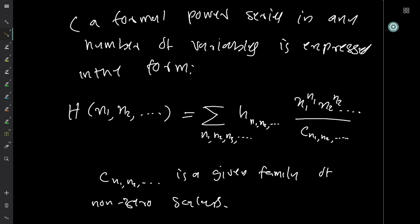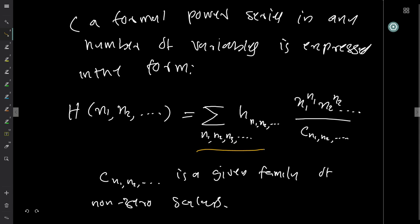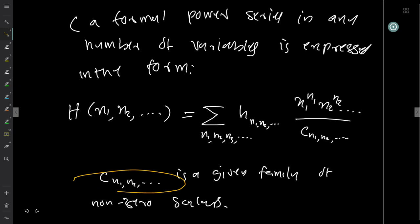A formal power series in any number of variables can be defined as follows. In infinitely many variables x_1, x_2, ..., it is a sum over all tuples (n_1, n_2, n_3, ...) of a(n_1, n_2, ...) · x_1^{n_1} · x_2^{n_2} · ... divided by C(n_1, n_2, ...), where C is a given family of nonzero scalars. In our case it was n!. This kind of expression is basically a formal power series, and you can generalize to any number of variables.